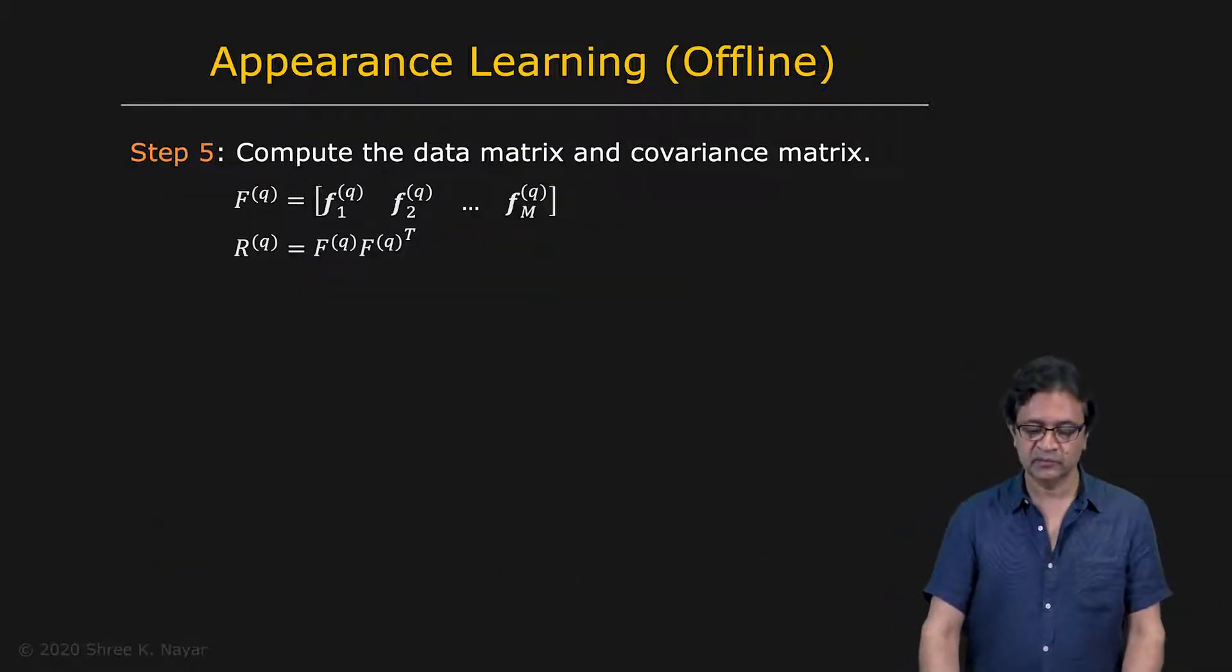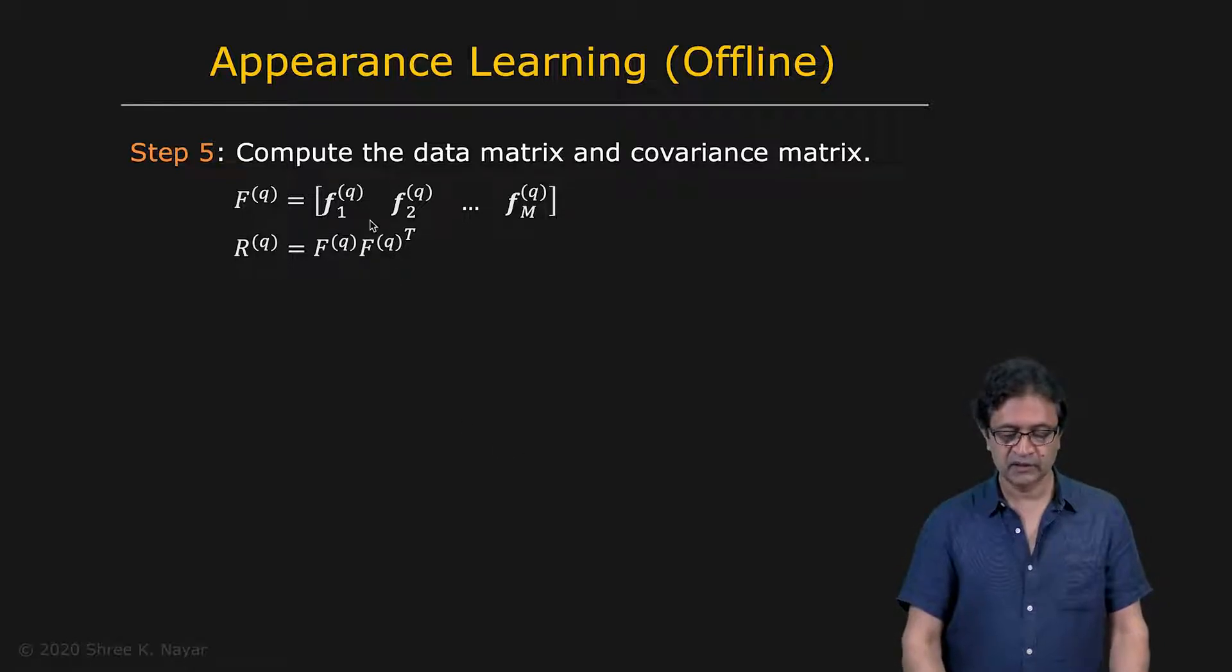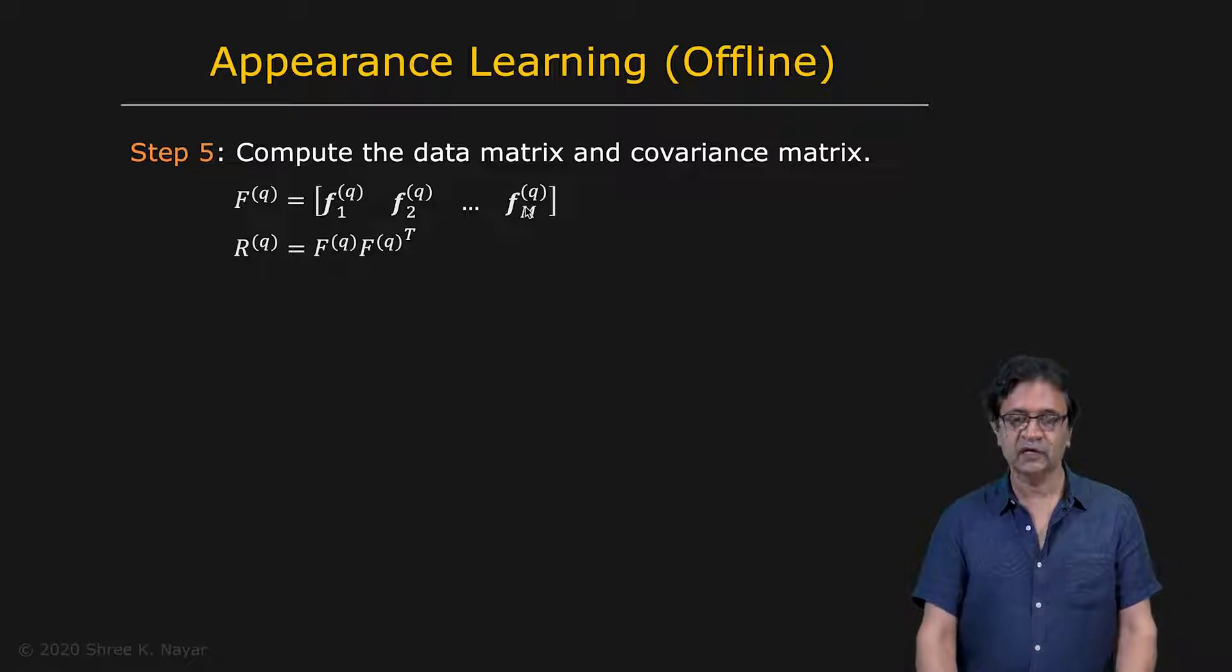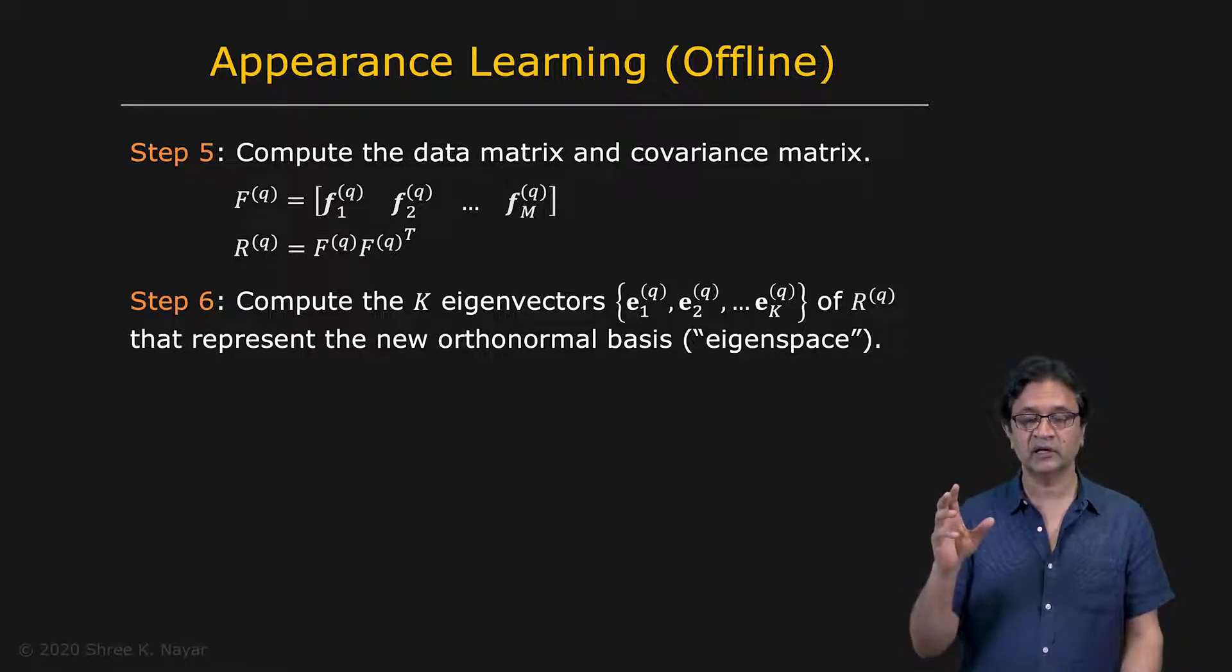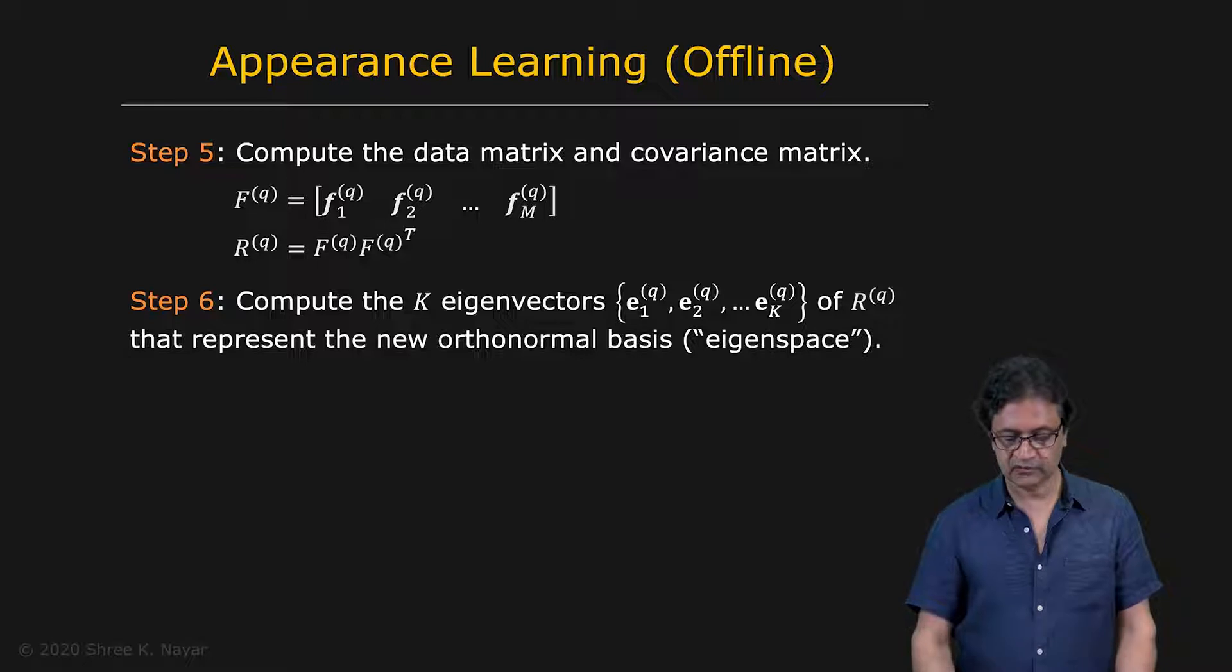Now with these mean subtracted images, we can construct our data matrix F. We know how to do that to stack up all the images. And then we compute our covariance matrix, which is FF transpose. And then we apply principal component analysis. That is, we find the K eigenvectors E1 through EK that represents this new orthonormal basis. Once again, we know how to determine K, the number K, by looking at the eigenvalues. So that gives us our eigenspace for this particular object.